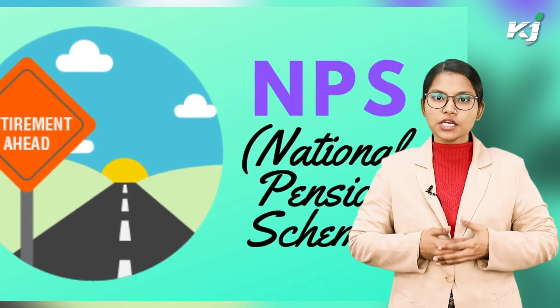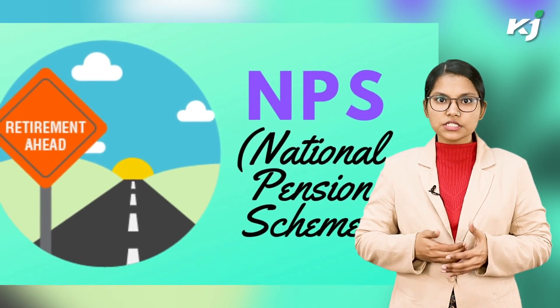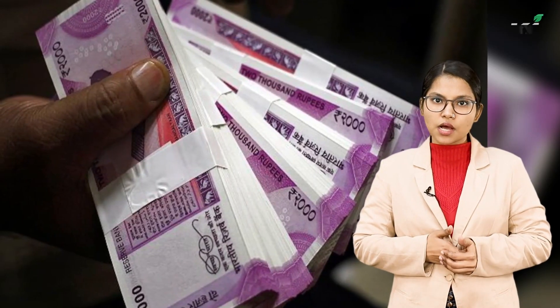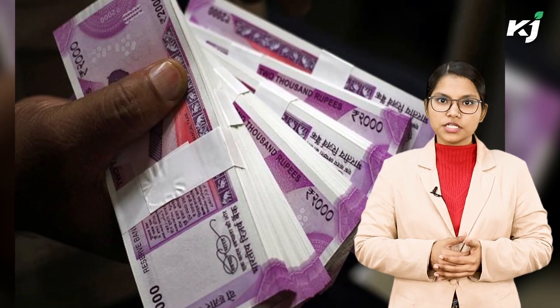SEBI Recruitment 2022 salary: Presently, the gross emoluments including SEBI's contribution towards the National Pension Scheme, Grade Allowance, Special Allowance, Dearness Allowance, Family Allowance, Local Allowance etc. at Mumbai at the minimum of this scale is approximately Rs 1,15,000 per month without accommodation and Rs 80,500 per month with accommodation.